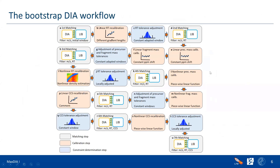In the DDA MaxQuant workflow, non-linear recalibration of masses, retention times, and collision cross-sections was based on running the peptide search engine twice — once to generate calibration masses, then doing the actual database search with tighter mass windows. This approach is not easily transferable to DIA because there is no search engine concept. The replacement is the so-called bootstrap DIA workflow.